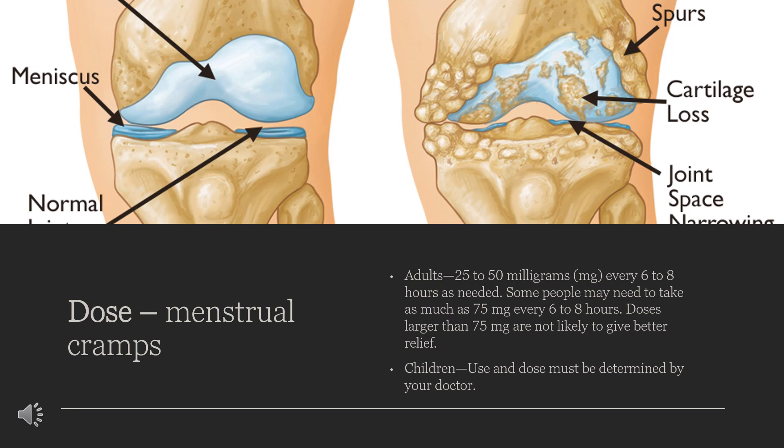For oral dosage form (extended release capsules), for osteoarthritis and rheumatoid arthritis: Adults — 200 mg once a day. Children: use and dose must be determined by your doctor.